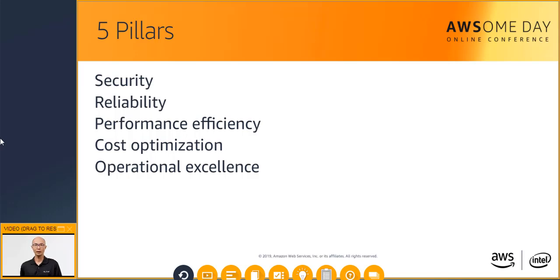AWS has developed a guide to help you with the design of your architecture from five different perspectives, or pillars. The pillars are security, reliability, performance efficiency, cost optimization, and operational excellence. Let's go into more details.